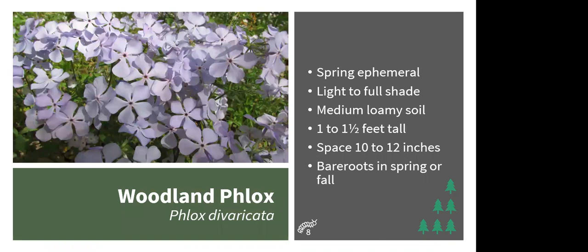Woodland blue phlox is another long-lasting spring ephemeral that spreads over time but not quickly. It prefers light to full shade and medium loamy soil, usually staying under 2 feet tall. Plant bare roots in spring or fall. Rabbits and deer do like to browse this one, so if you have an abundance of those in your area it may not be the best choice. Plants that don't flower in a given year will keep their foliage longer into summer.